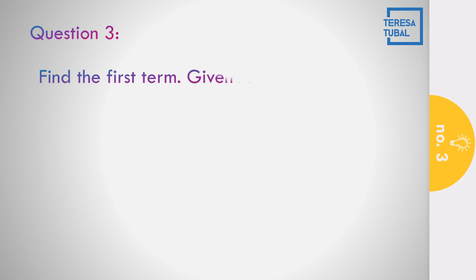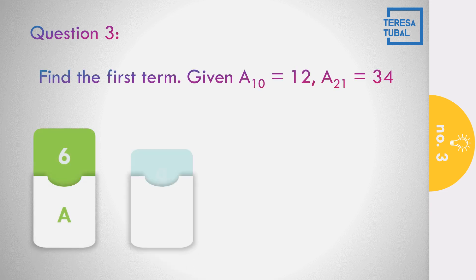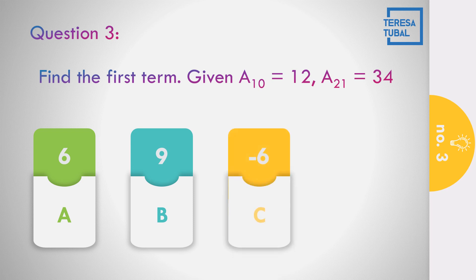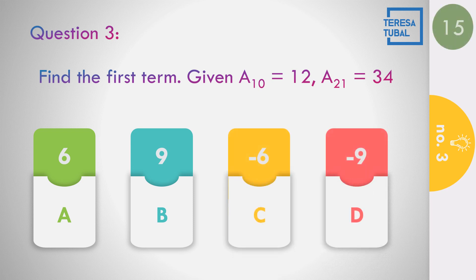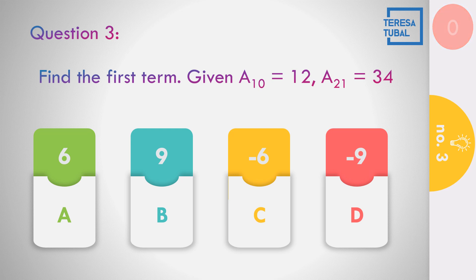Question number 3: Find the first term given that the tenth term is 12 and the twenty-first term equals 34. Options: a) 6, b) 9, c) negative 6, d) negative 9. Time's up. The answer is equal to negative 6.